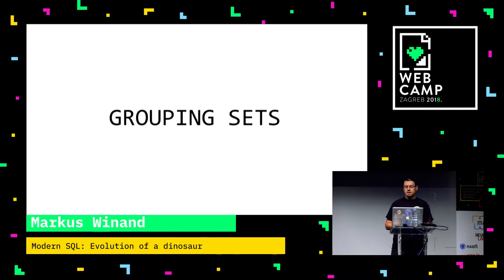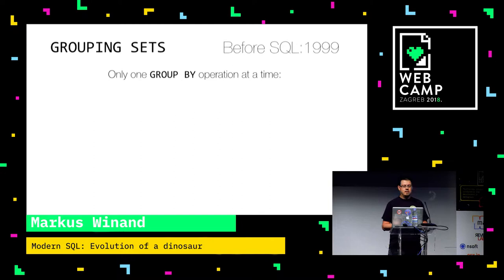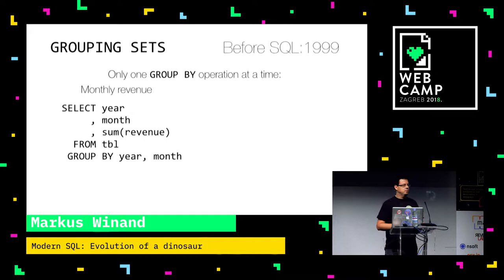The feature I'm showing you here is grouping sets. So what is it about? There was one limitation — and this is a pattern I will repeat in this talk. I will first show you how the problem looks, why it was a problem with SQL 92, and then show a better solution with more modern SQL. So imagine you want to do some reporting — like revenue figures on a monthly basis, one row for each month, like this query does.